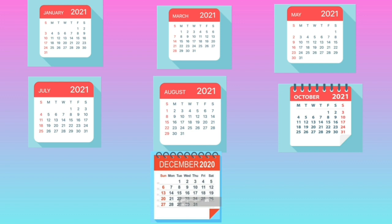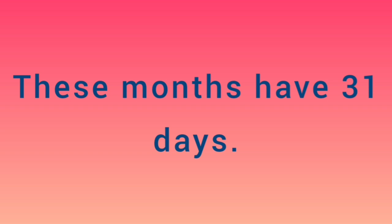January, March, May, July, August, October, and December — these months have 31 days.